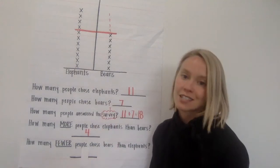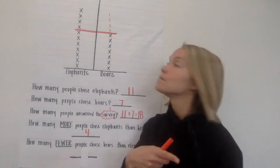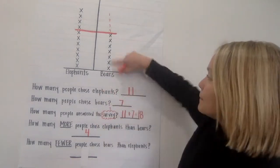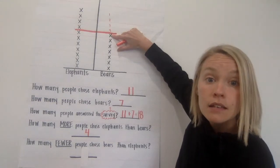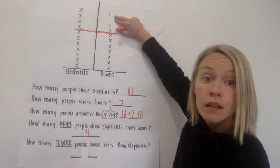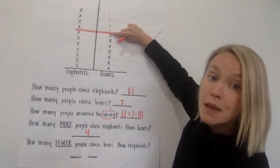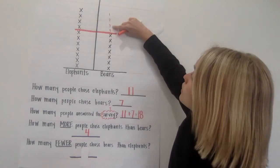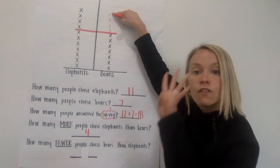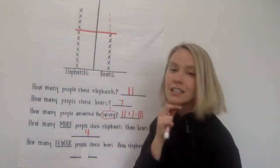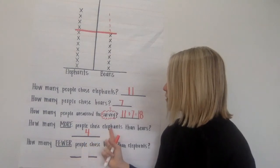Another way you could do this: we know bears has seven — how many does bears need to be the same as elephants? I can count the blank spaces: one, two, three, four. Bears needs four more to be the same as elephants. So that's how we know elephants has four more than bears.